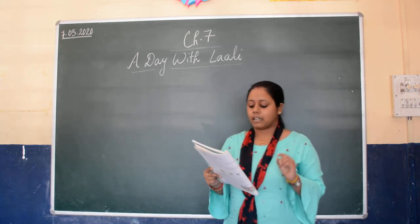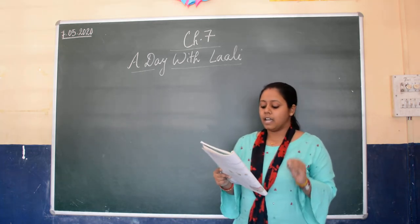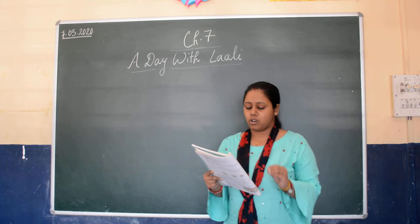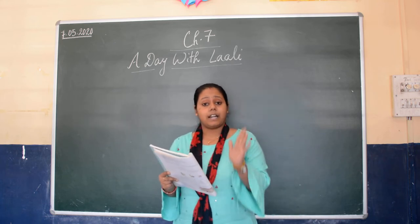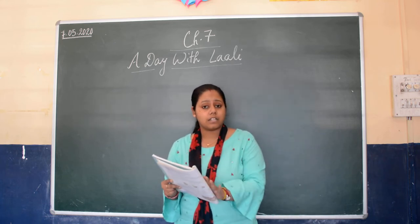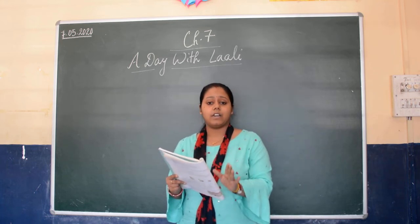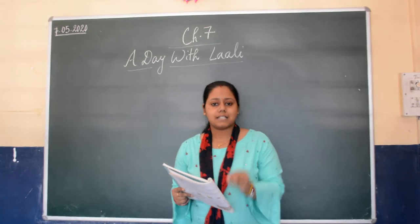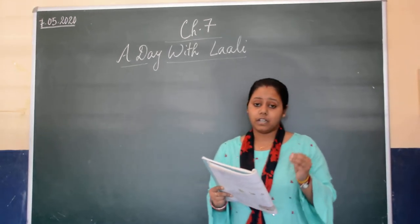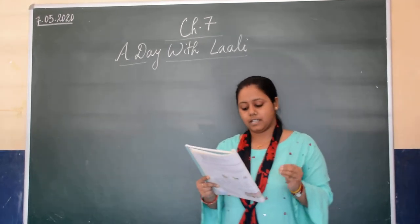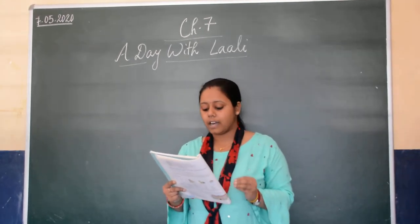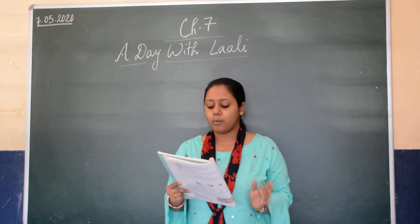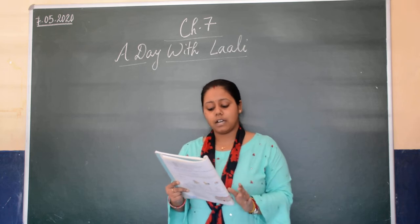Second sentence: there are enough books on the shelf — means there are books present which are available as much as we require. Then number C: there are too many books on the shelf.